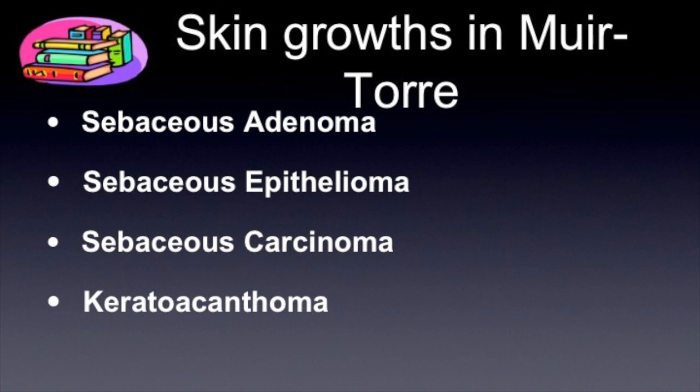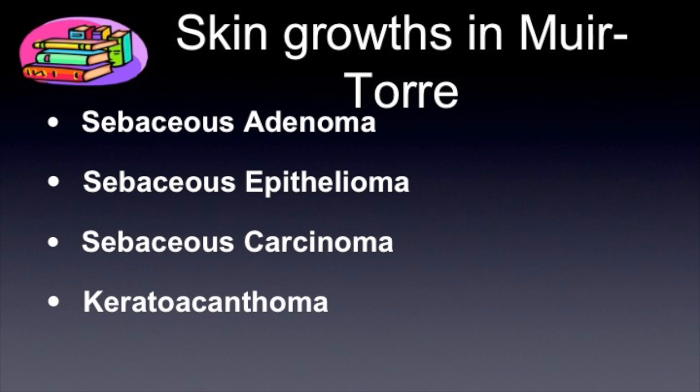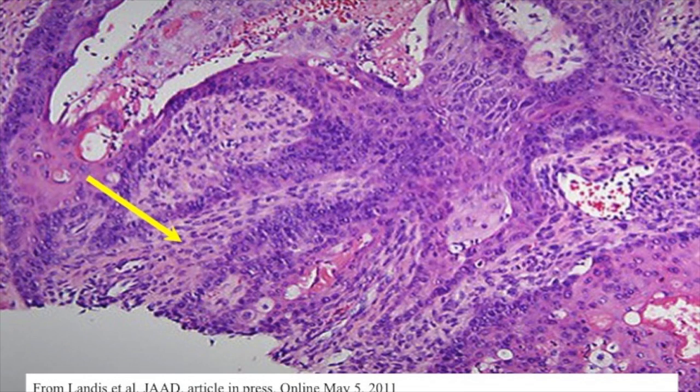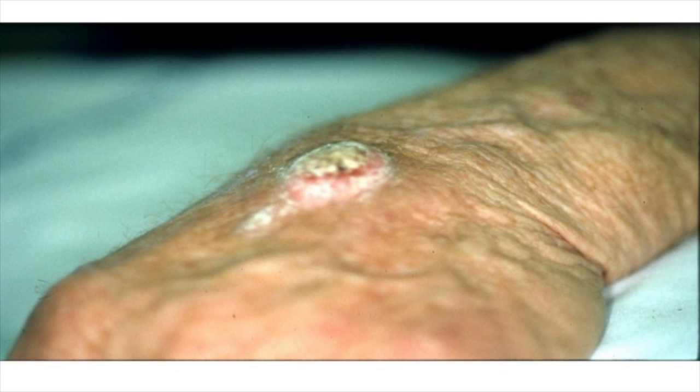These are the growths that you can see in Lynch syndrome. If you're seeing a dermatologist, even before you have a diagnosis of Lynch syndrome, if a dermatologist does a skin biopsy and the pathology report comes back showing sebaceous epithelioma or sebaceous adenoma, those would give your dermatologist a clue that you might be carrying a gene that causes Lynch syndrome. This is how the changes look under the microscope to the pathologist — the whitish, light-colored changes are sebaceous changes that go with Lynch syndrome. This is a picture of a keratoacanthoma.